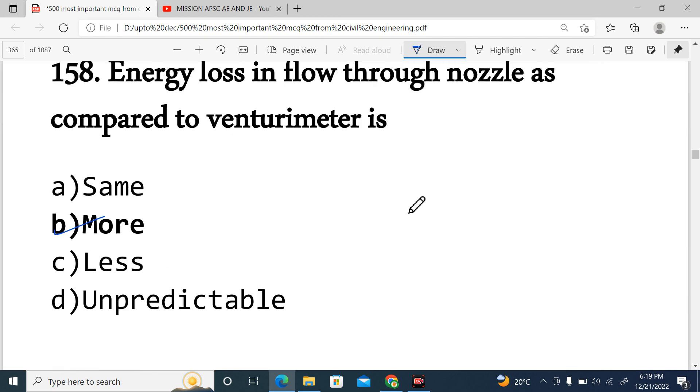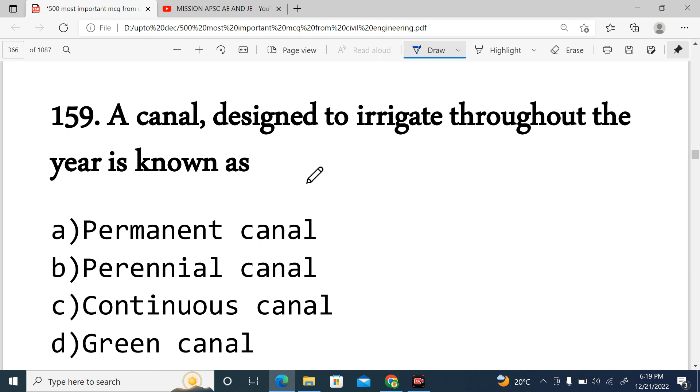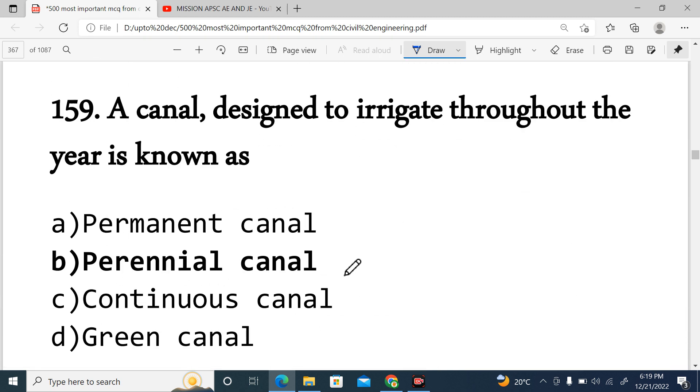Question 158: Energy loss in flow through nozzle as compared to venturimeter. Venturimeter is used to measure the flow rate, but nozzle is used to increase the flow velocity at the outlet. Ultimately, energy loss in nozzle is more. Option B is correct. Next, Question 159: A canal designed to irrigate throughout the year is known as a perennial canal. Perennial canal gets water from a perennial river that flows throughout the season - summer, winter, monsoon. So the canal is called a perennial canal.